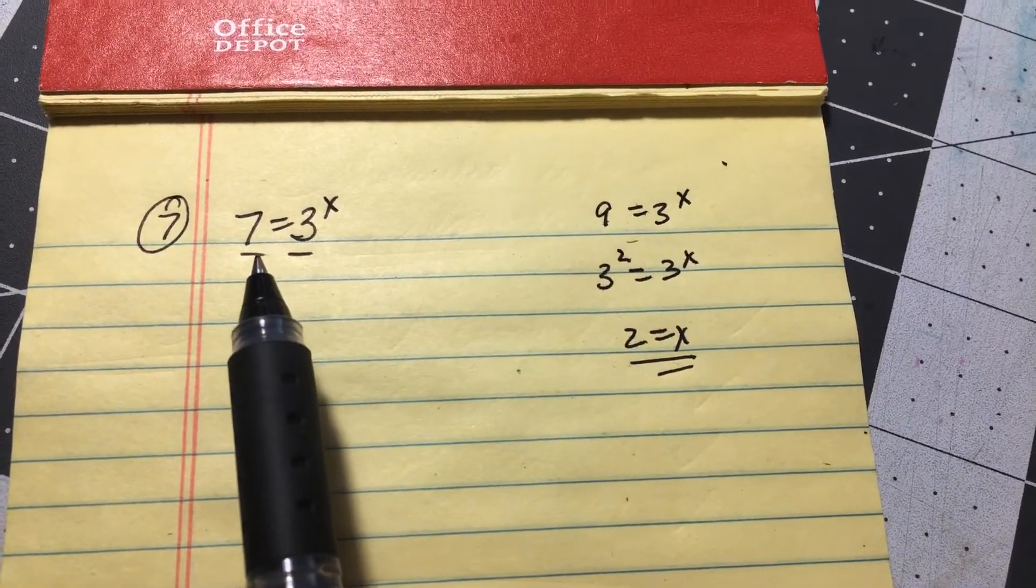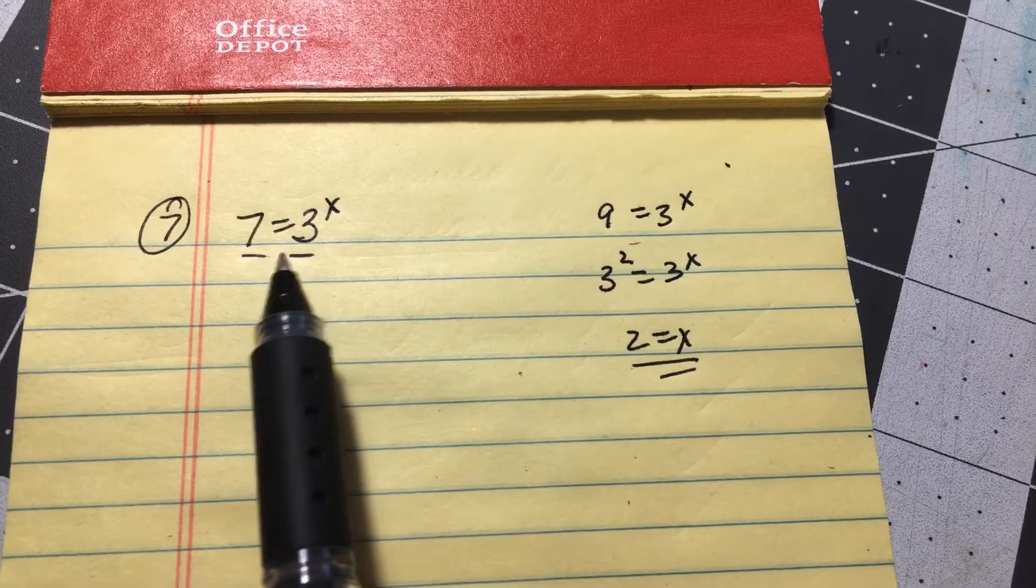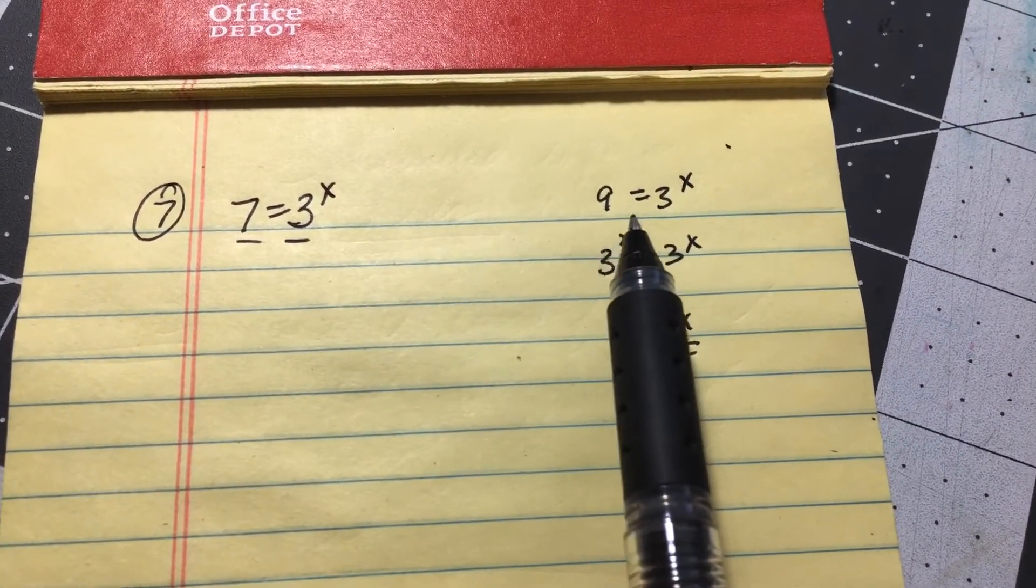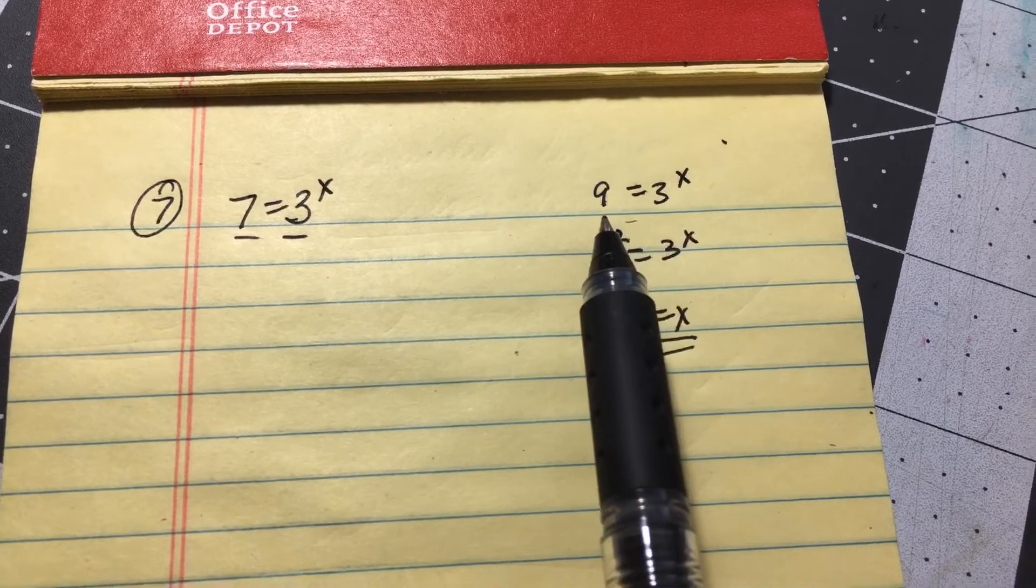Okay Natalie, here we go. This is number seven: 7 = 3^x. Now the first thing you want to check is, notice a problem like this. You know, 9 = 3^x, where...